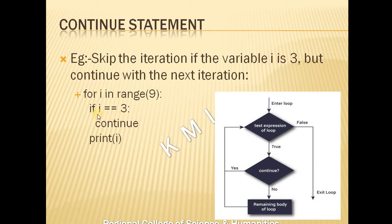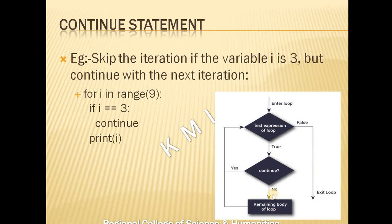For example: for i in range(9), if i equals 3, then continue. This means when i equals 3, that iteration is skipped. The loop does not terminate; it continues with the next iteration. If the variable i is 3, skip that iteration and continue with the next one.